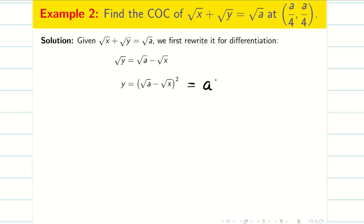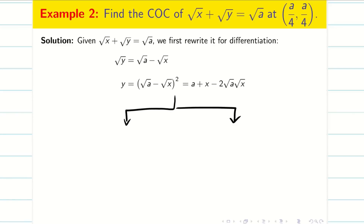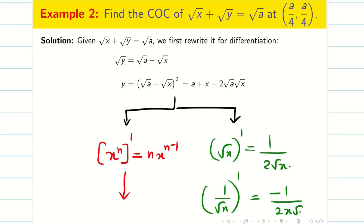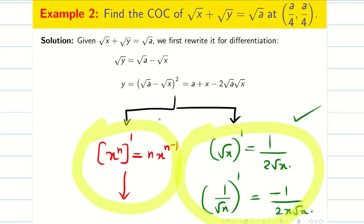Expanding using (a − b)² = a² + b² − 2ab, that gives a + x − 2√a·√x. Now it is very easy to solve. You can solve this problem in two ways: either apply the direct formula using the power rule (differentiation of xⁿ is n·xⁿ⁻¹), or use the standard results: differentiation of √x is 1/(2√x) and differentiation of 1/√x is −1/(2x√x). I will show both ways.